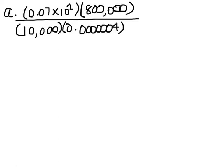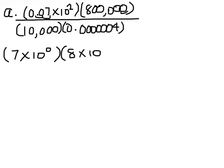In this one we have 4 numbers that we're going to have to convert to scientific notation. This first one we're going to have to move 2 places to the right, making that 7 times 10 to the 0, because to the right means negative 2, and 2 and negative 2 makes 0. And this will be 8 times 10 to the 1, 2, 3, 4, 5th.